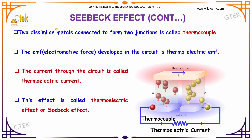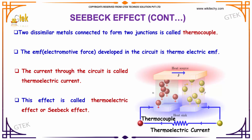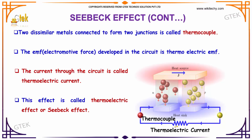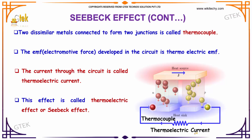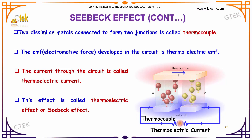Two dissimilar metals connected to form two junctions — this is called a thermocouple. The electromagnetic force developed in this circuit is referred to as thermoelectric EMF. The current path is referred to as thermoelectric current, and this effect is called the thermoelectric effect or Seebeck effect.